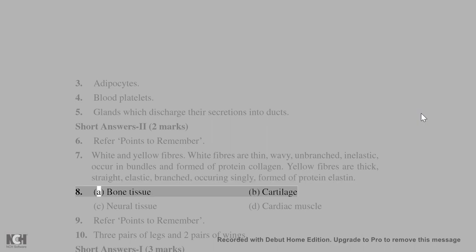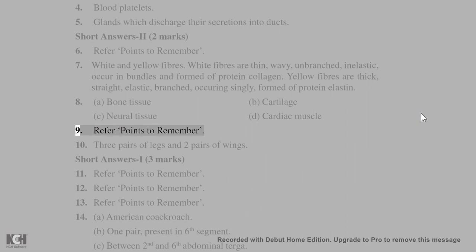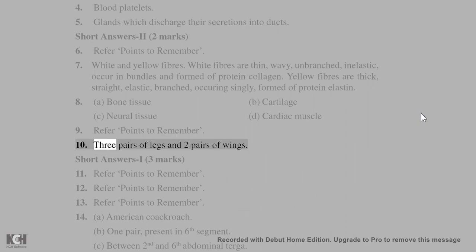8. A. Bone tissue. B. Cartilage. C. Neural tissue. D. Cardiac muscle. 9. Refer points to remember. 10. Three pairs of legs and two pairs of wings.